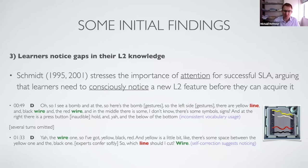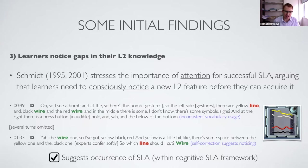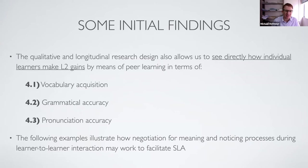The qualitative and longitudinal research design also shows us in a direct way how individual learners can make second language gains, independently of the theoretical framework. We can see instances of vocabulary acquisition, improvements in grammatical accuracy, and pronunciation accuracy improvements — perhaps to a lesser extent. The processes involved are still negotiation for meaning and noticing, but here we can see the learning happen directly.